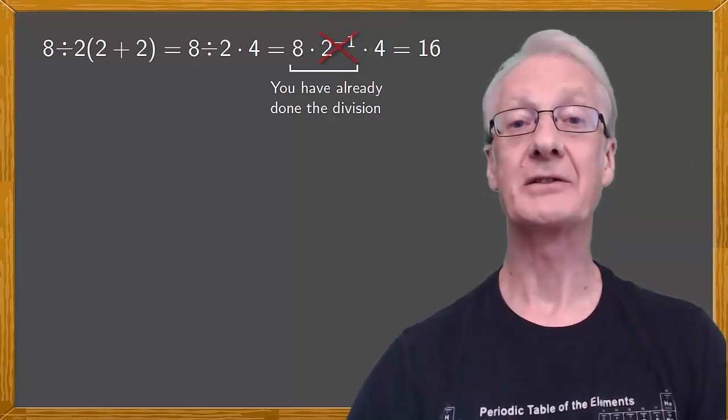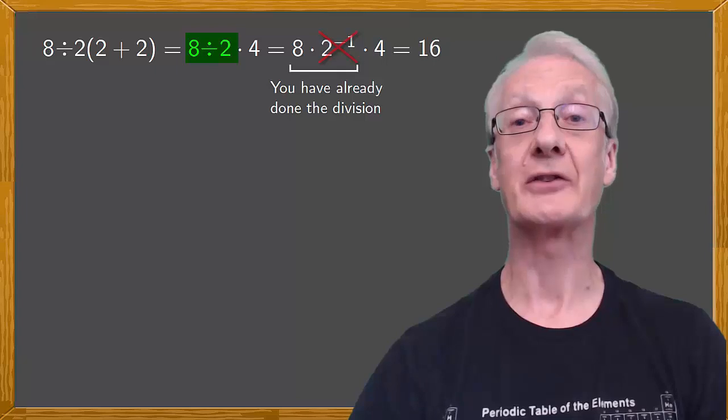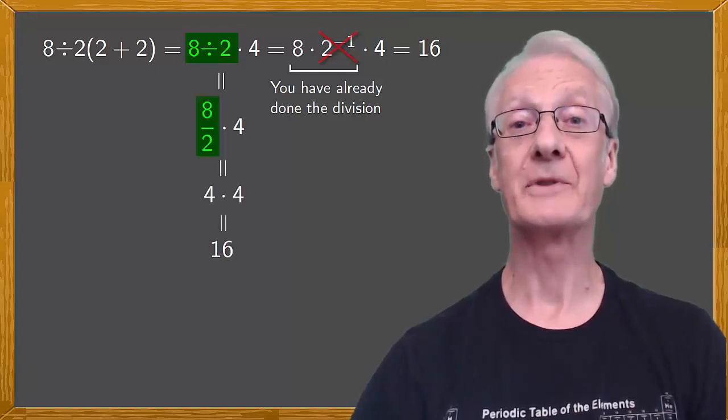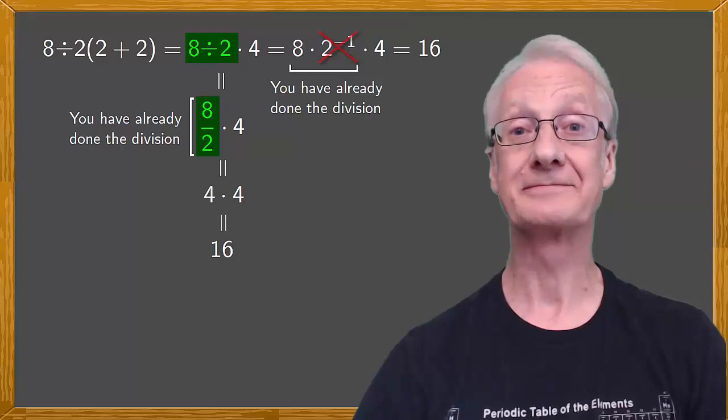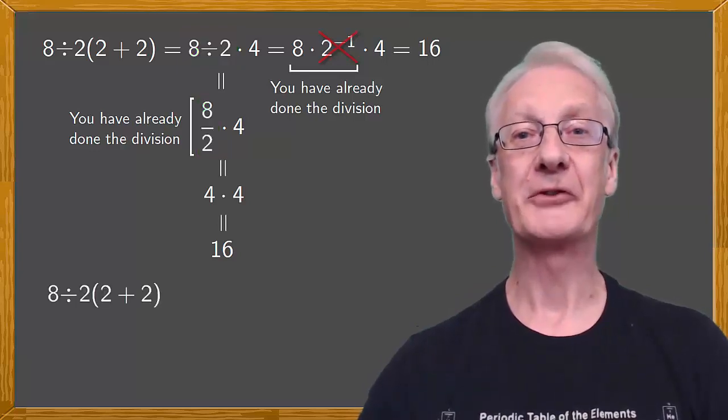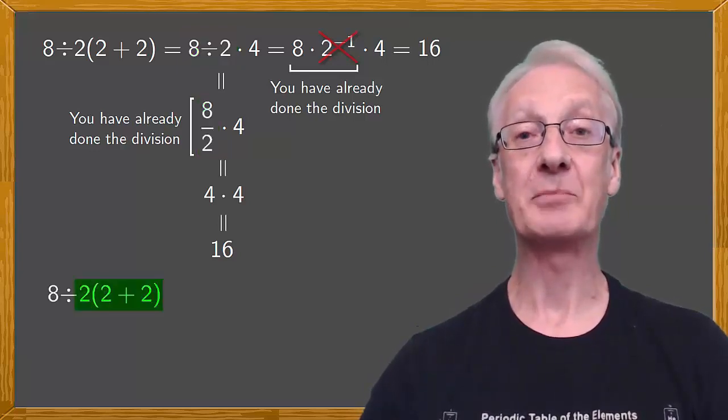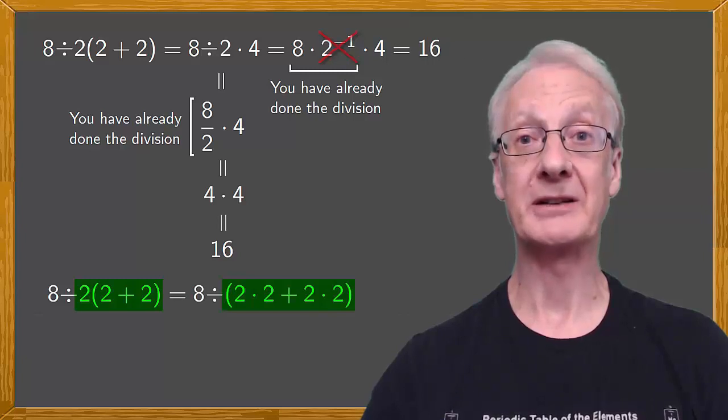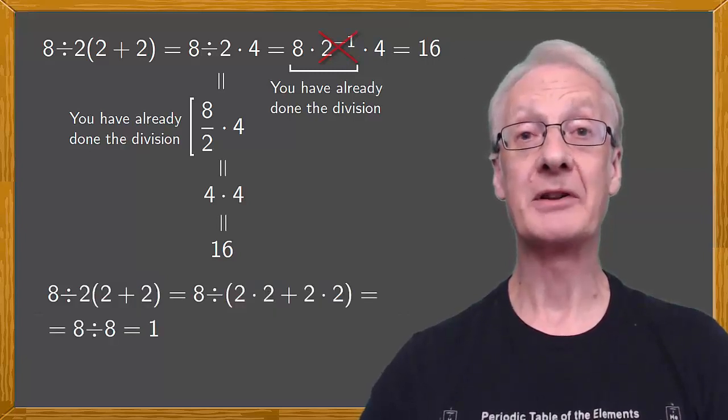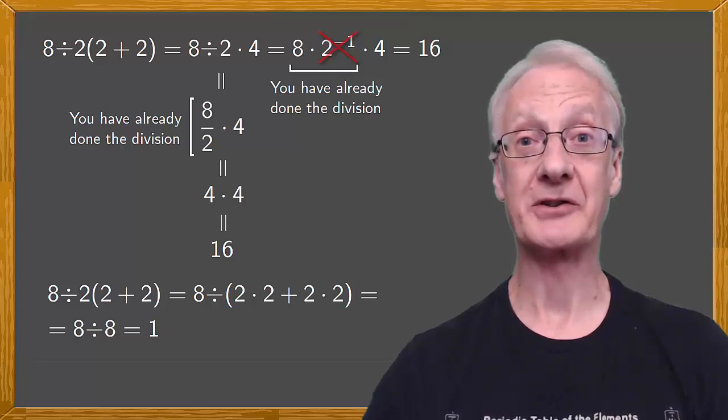And it doesn't matter if you express the division as a fraction. The trap is the same. You've already done the grouping. Some people see the parenthesis at the end and apply the distributive property to doing the product. But there's nothing to say that the multiplication has to be done first.